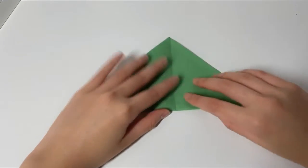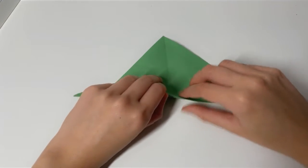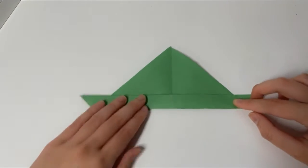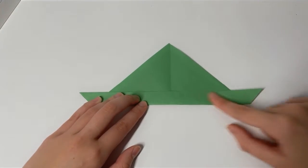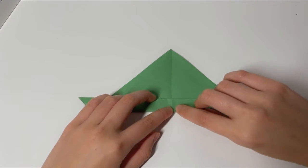And once you do that, you should see a line in the middle where you can use as a guideline, and you're going to fold the bottom of the triangle upwards. It doesn't matter how far you fold it, as long as you fold it and you can see it.